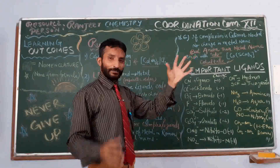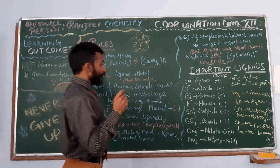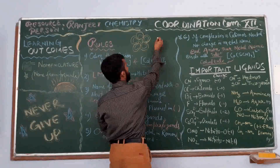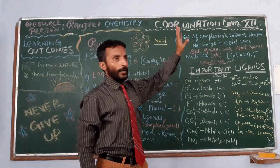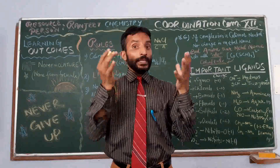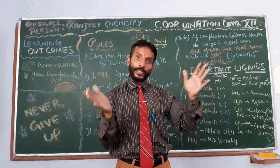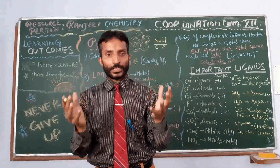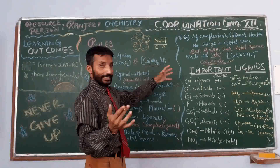What are the rules? The rules are written here. The first rule is that the cation is written first, then the anion — just as in our inorganic salts, where we have cation first and then anion. Same for coordination compounds: first the cation, then the anion. So whenever we write the name of a coordination compound, the name of the cation is written first, then the anion.